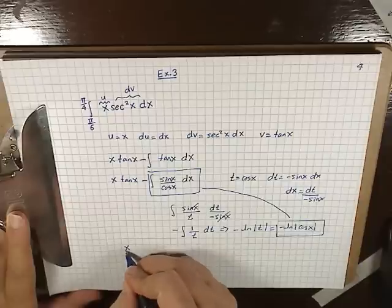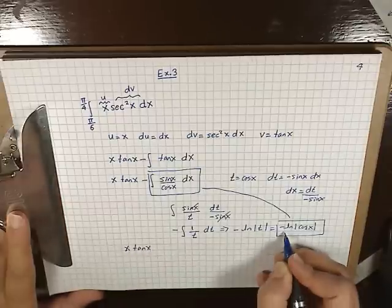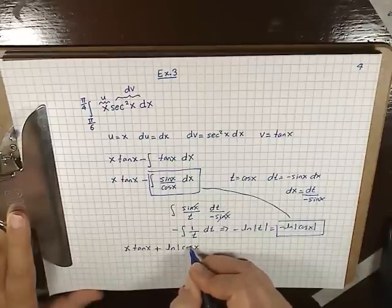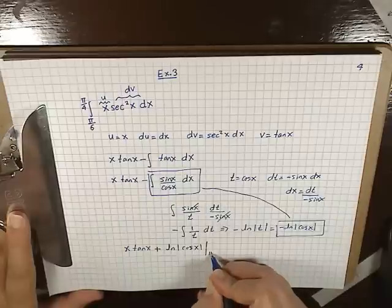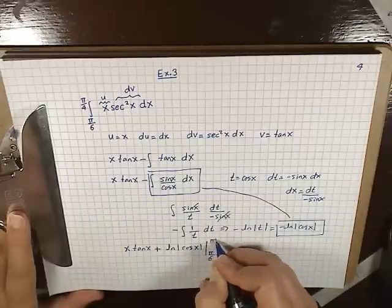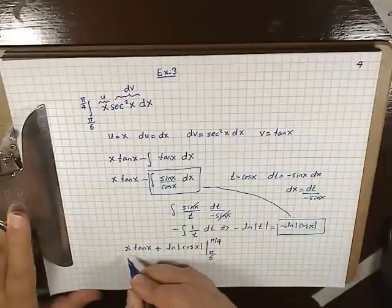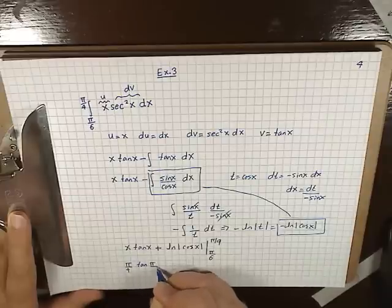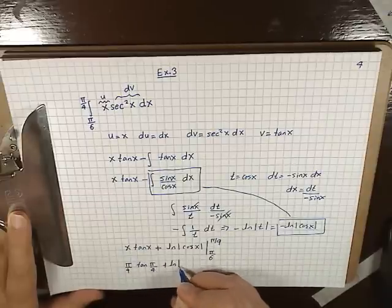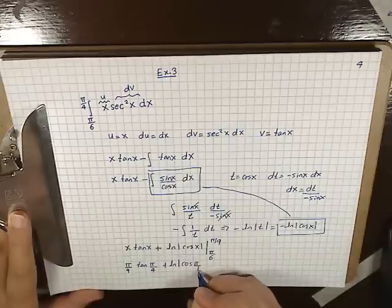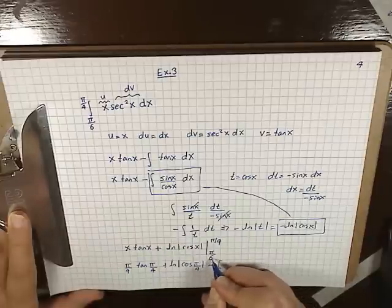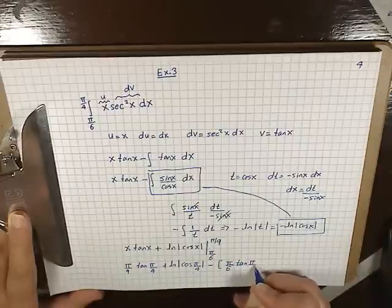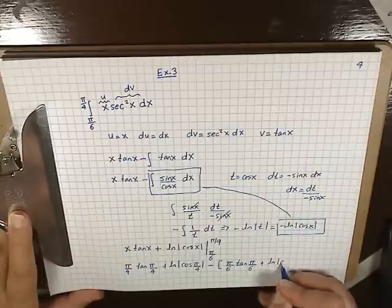Let's rewrite everything: x tan x minus minus, which makes it a plus, ln|cos x|. Now let's evaluate this from π/6 to π/4. Putting the upper limit in: π/4 times tan(π/4) plus ln|cos(π/4)|, minus — putting the lower limit in — π/6 times tan(π/6) plus ln|cos(π/6)|.